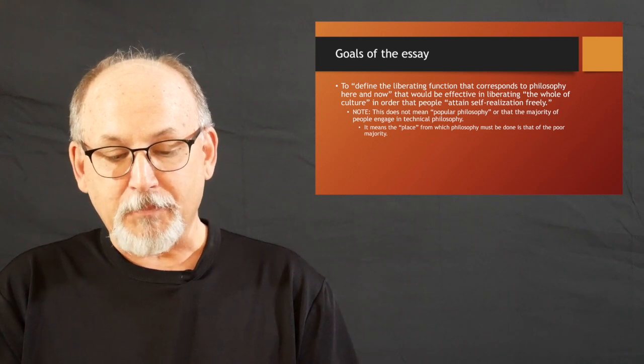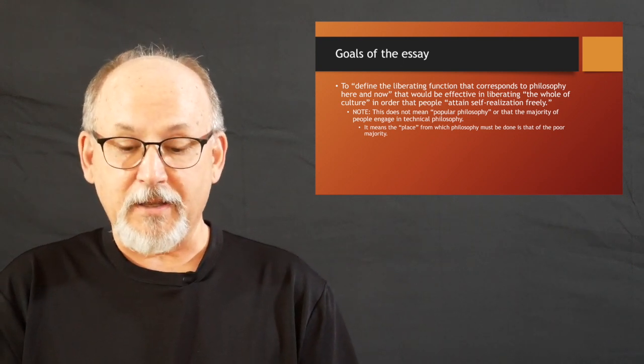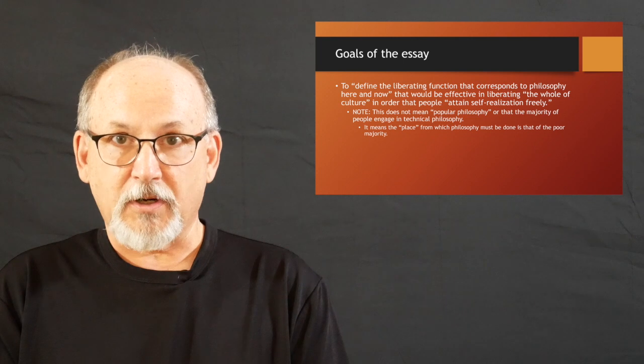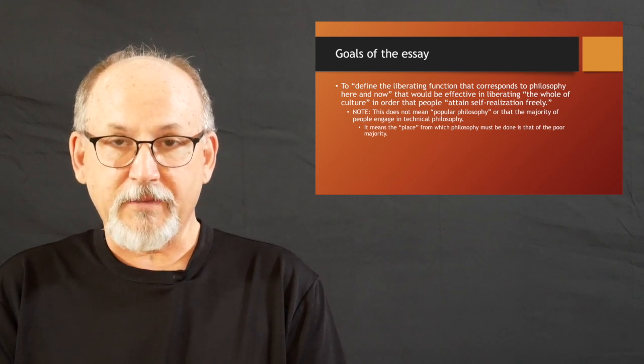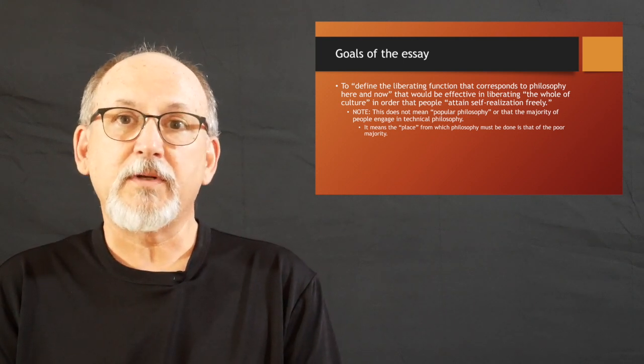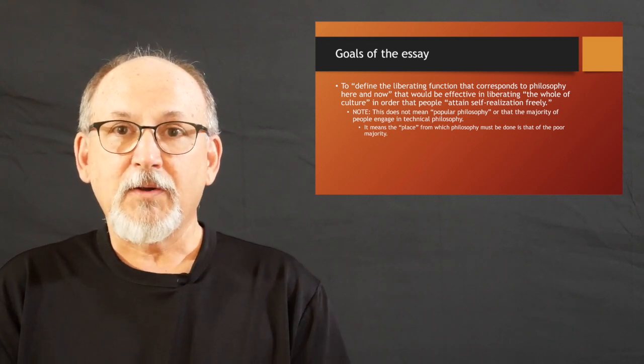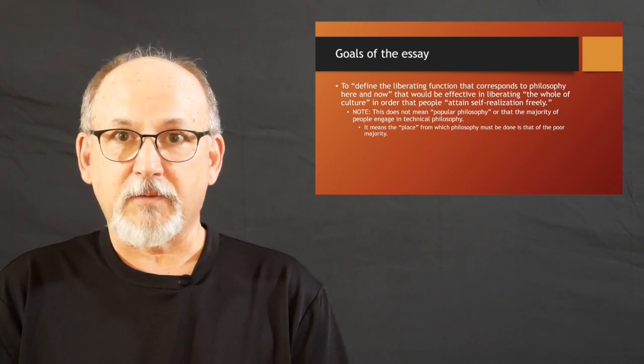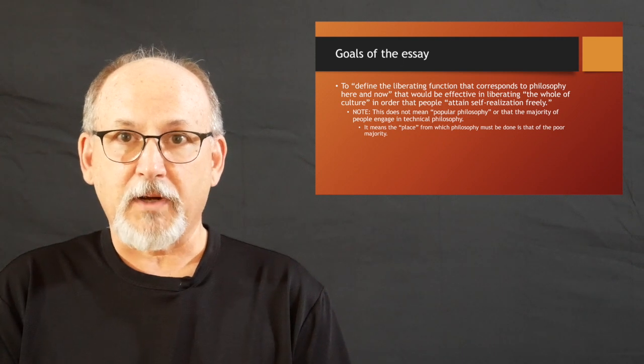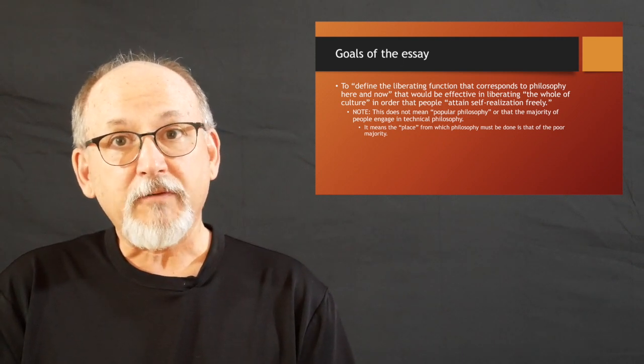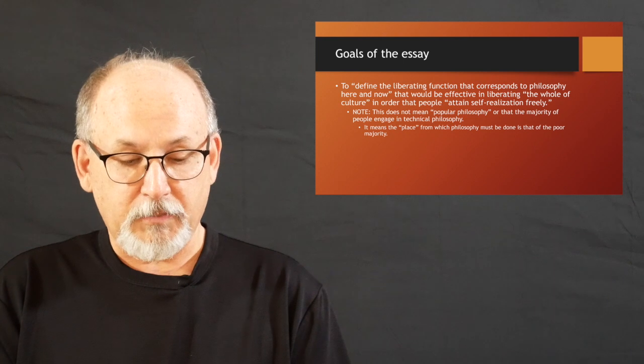For Ellacuría, it means the place from which philosophy must be done is that of the poor majority. We have to start from there. We have to find the right place to do philosophy because we always are doing it from some place. And the place from which we do philosophy will impact the kind of philosophy that we do. It will impact what we're able to see and what will be prevented from seeing, depending on the place.